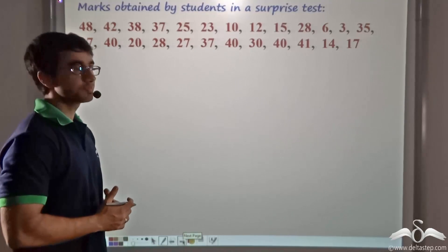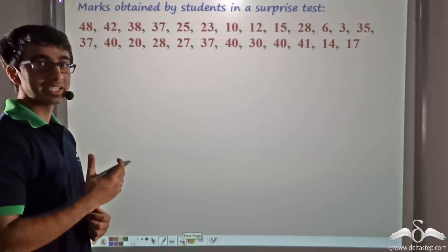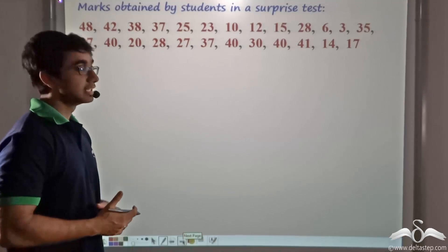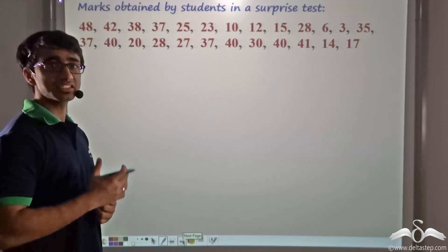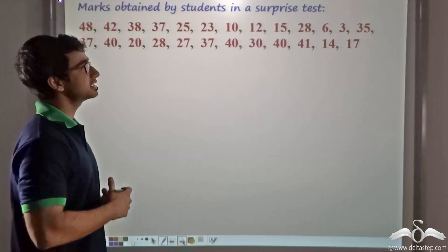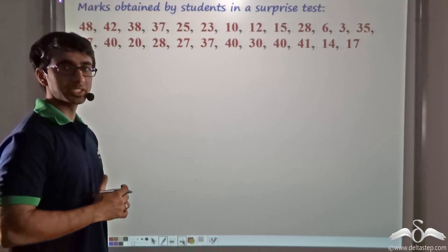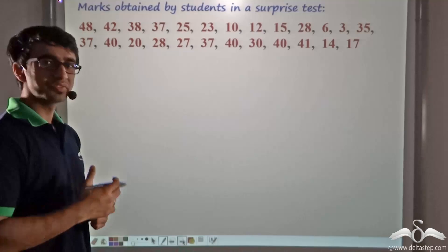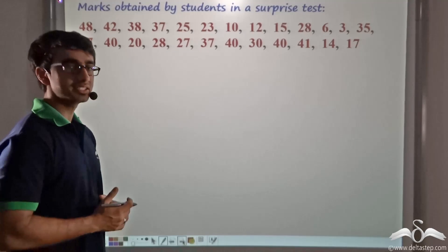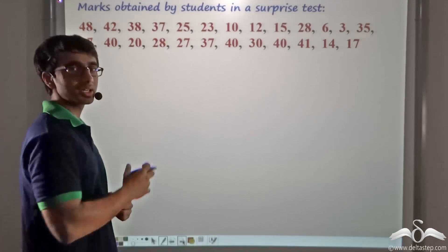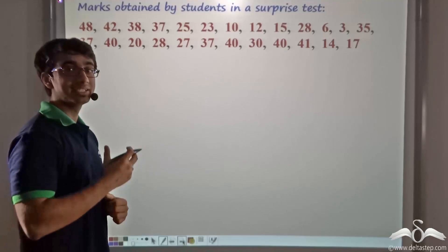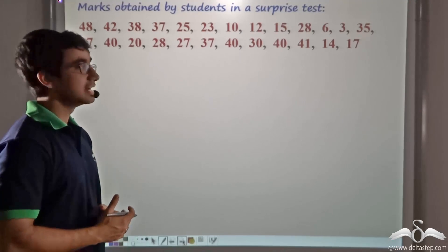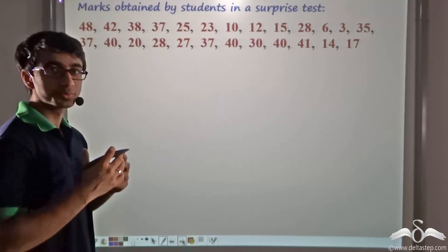Consider a scenario where a surprise test has been taken for students and instead of a total marks of 10, the total marks in this case is 50. As you can see, a pretty large amount of data has been considered here. Now to draw a simple frequency distribution table will be quite inconvenient to represent the individual marks obtained. It will be tedious for the teacher. So under such circumstances, it is usually wiser to group this data.